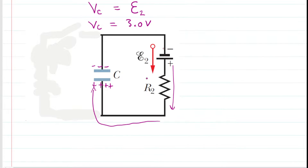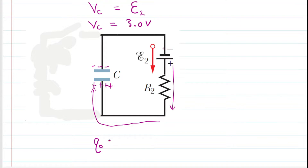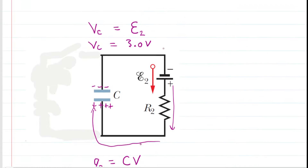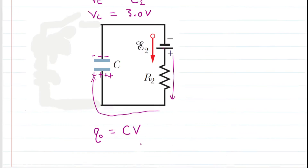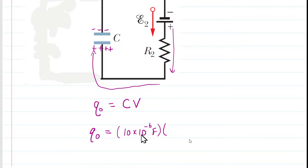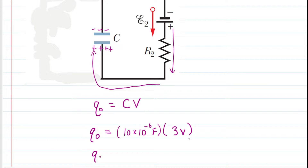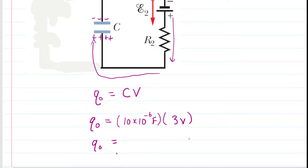That's useful because it allows us to calculate the charge on each plate of the capacitor. We'll call this the initial charge, Q naught. Q naught equals the capacitance multiplied by the potential across the plates. The capacitance C was given as 10 microfarads, so 10 × 10⁻⁶ farads, multiplied by 3 volts. The initial charge on the capacitor plates is 3 × 10⁻⁵ coulombs.